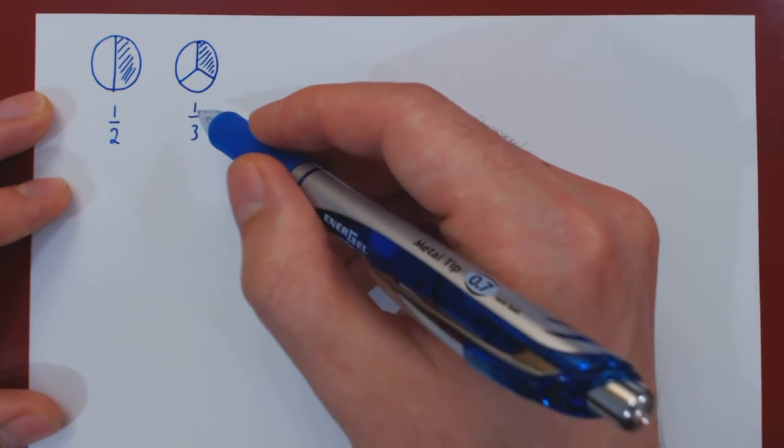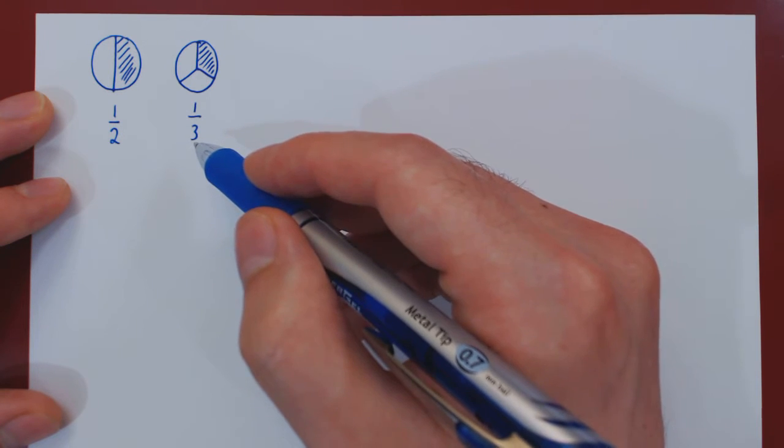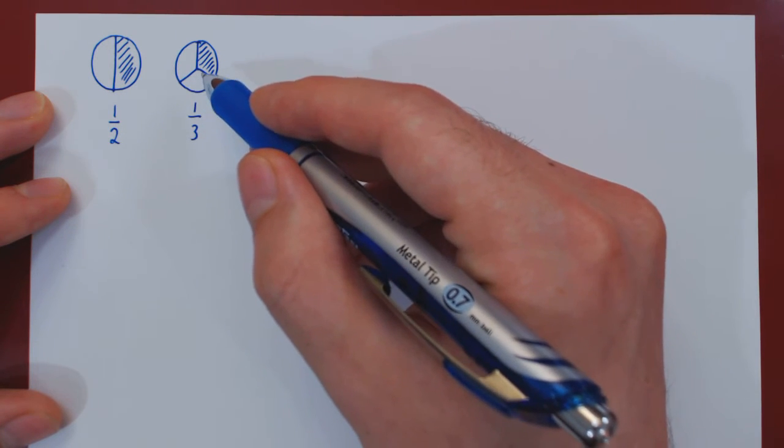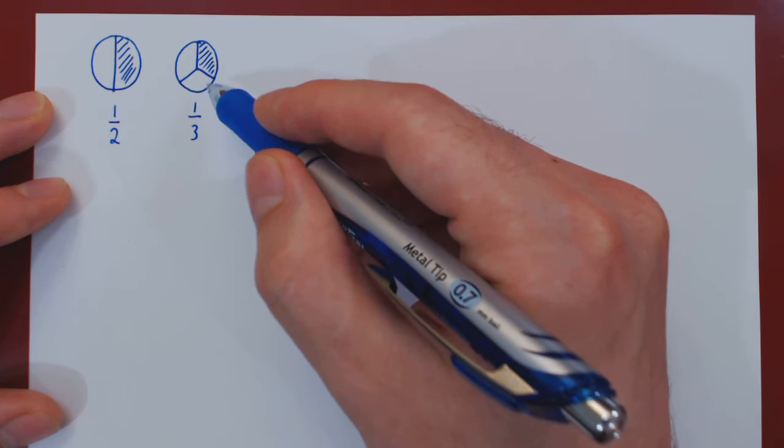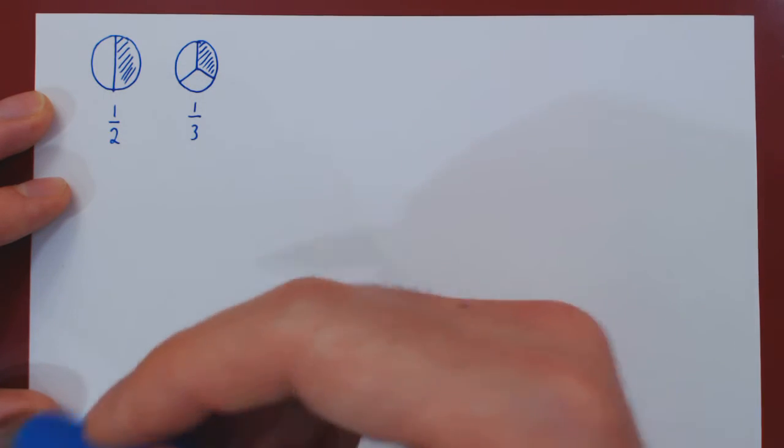If we said two thirds instead of one third, then we would also take this region as well. So this with this would correspond to two thirds.